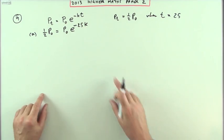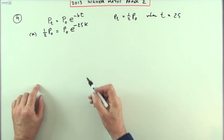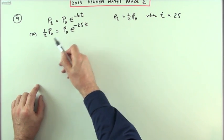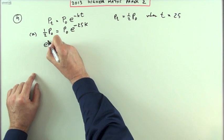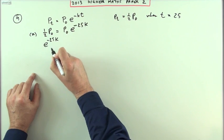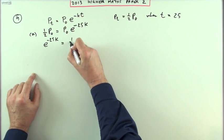Well, there's only one thing I don't know. I can find that by getting rid of all the bits and pieces. Get rid of the p-naught, get rid of the e, get rid of the negative 25. Well, get rid of the p-naught, divide both sides by p-naught, and just writing it the other way around, I've got e to the negative 25k equals a half.